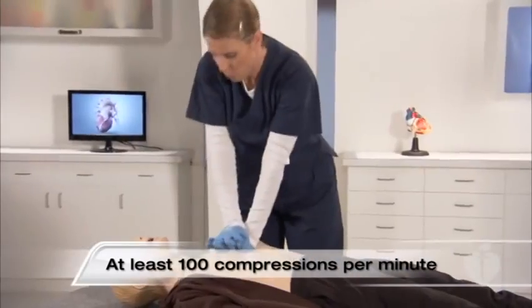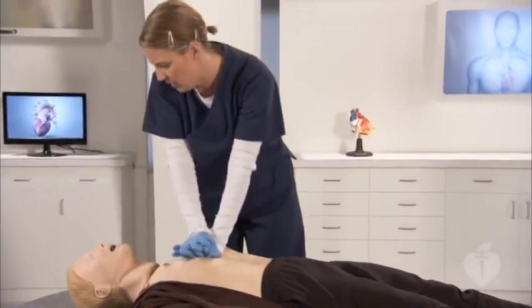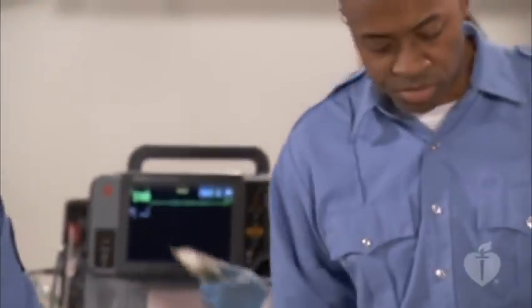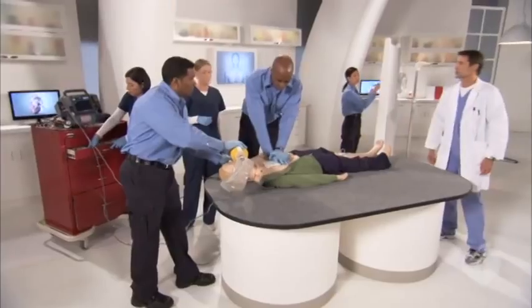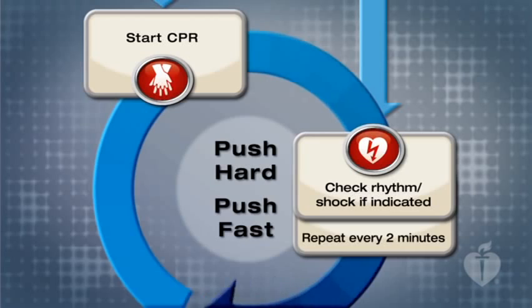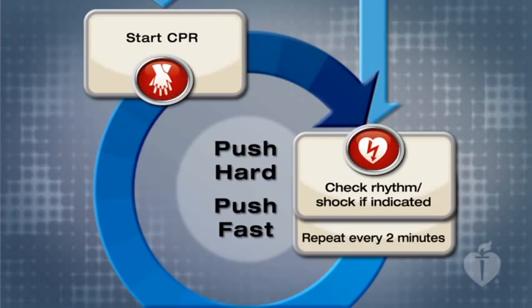Scientific studies show that the number of chest compressions delivered is an important direct determinant of ROSC and neurologically intact survival. It can be difficult to maintain such a vigorous pace, which is why the American Heart Association recommends that rescuers switch roles after two minutes or five cycles of 30 compressions and two ventilations. High-quality CPR minimizes interruptions in chest compressions. Studies show that even healthcare providers interrupt compressions far too often — in some cases spending 25% to 50% of a code without delivering chest compressions. The circular BLS algorithm emphasizes the two-minute period of compressions and ventilations, punctuated by a break of no more than 10 seconds to assess the patient and deliver defibrillation.